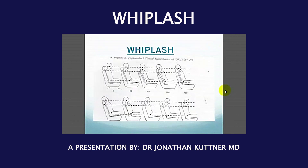Let's now look at what happens in whiplash. Here is a person sitting in a chair. The commonest cause of whiplash is being struck from behind by somebody who was distracted — changing the music, talking on a cell phone, or asleep — and they plow into the back of you. As you get shunted forwards, you are held by a seatbelt, so the forward movement of your body is transmitted into an upward movement.